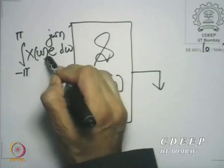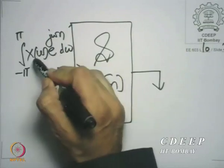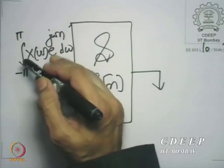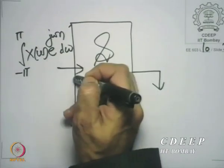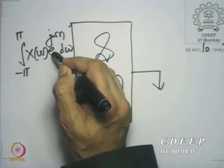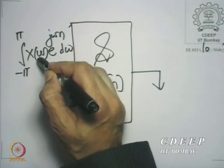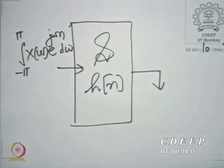X(ω) requires homogeneity — it is a constant. So multiply each of these vectors by X(ω), then integrate or add over all such components. Now, you know the property of LSI systems: the output to e^(jωn) is H(ω) times e^(jωn). Because of homogeneity, when you multiply it by X(ω), the output is X(ω) times H(ω) e^(jωn). Because of additivity, when you integrate this over all ω, the output will also get integrated over all ω.